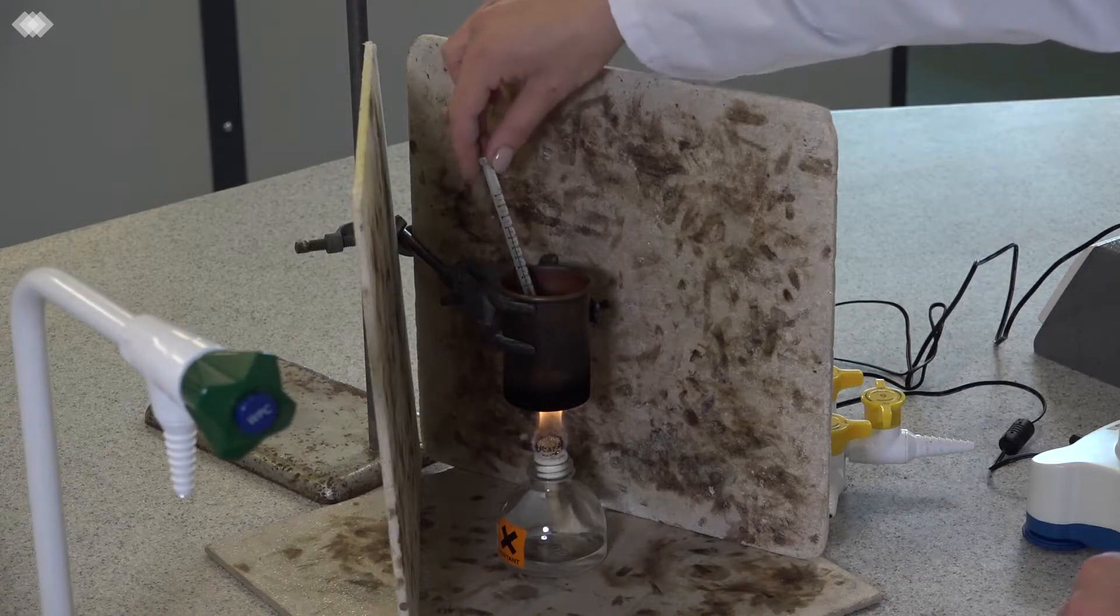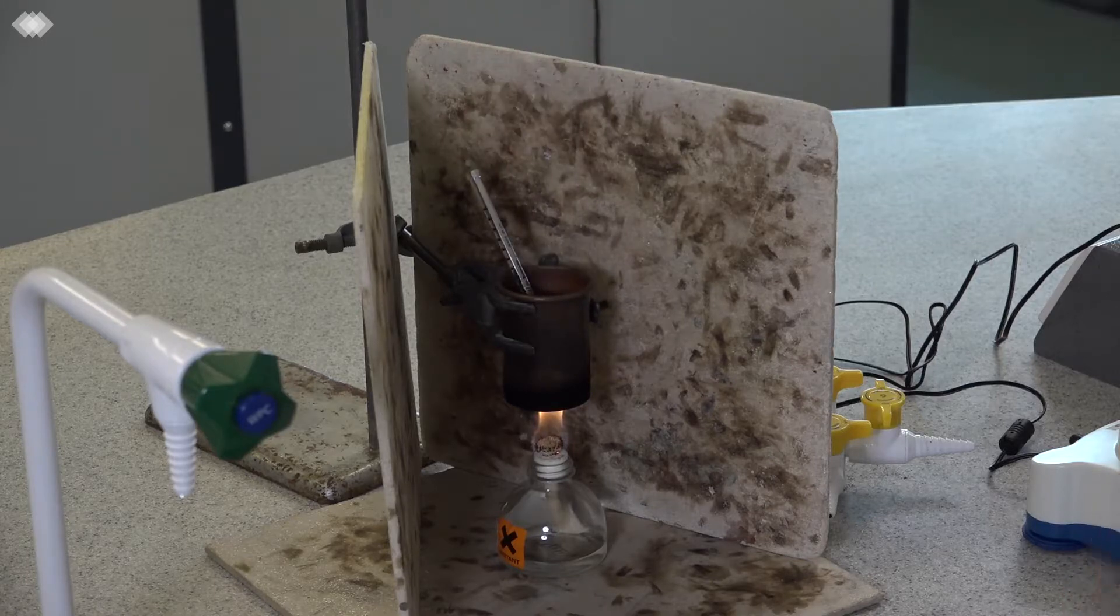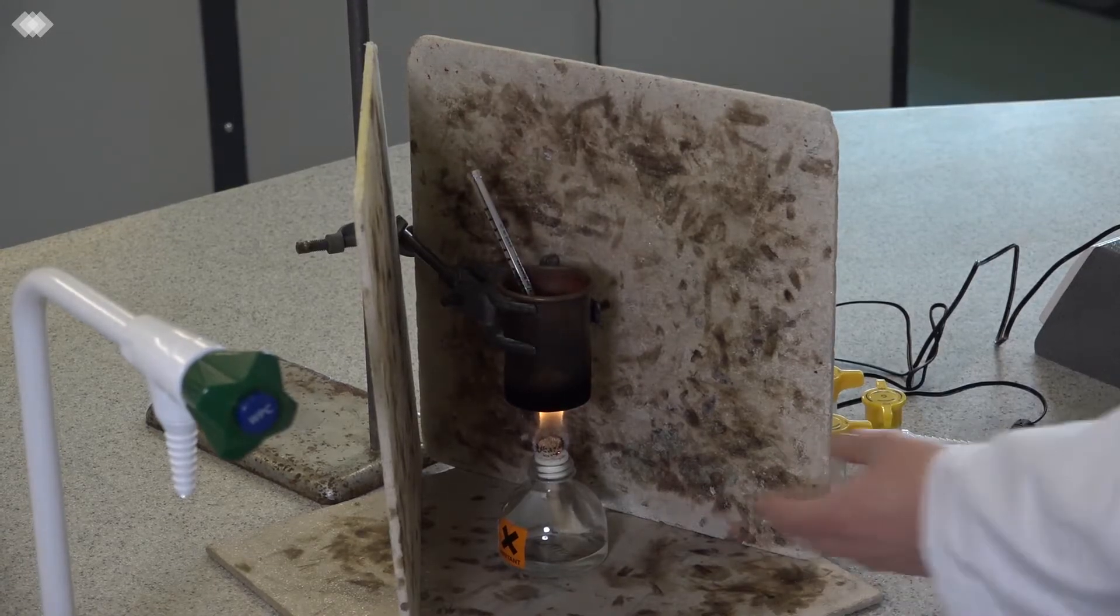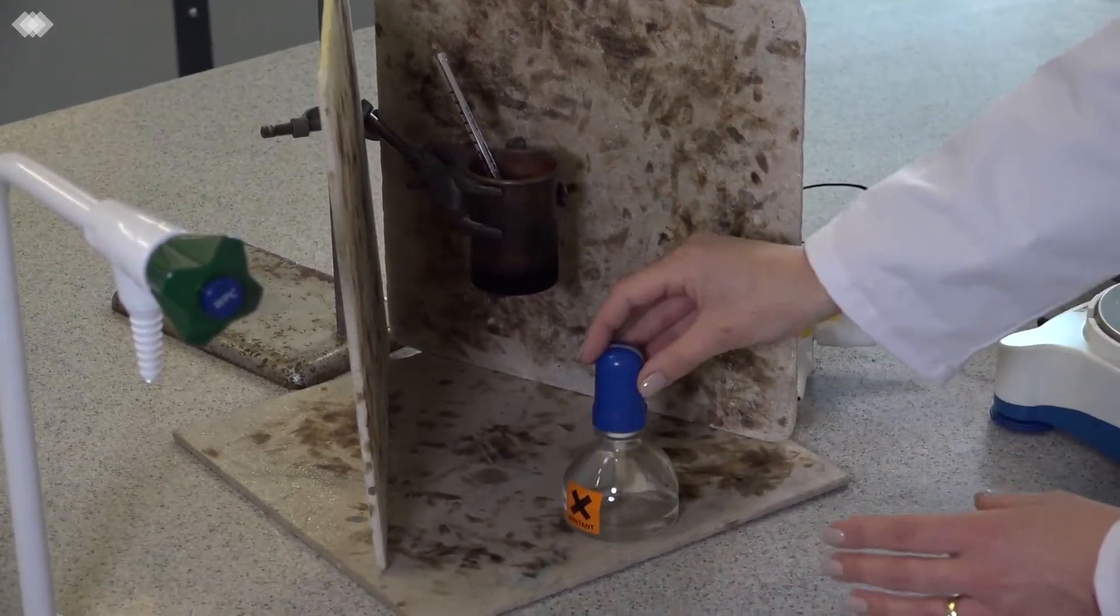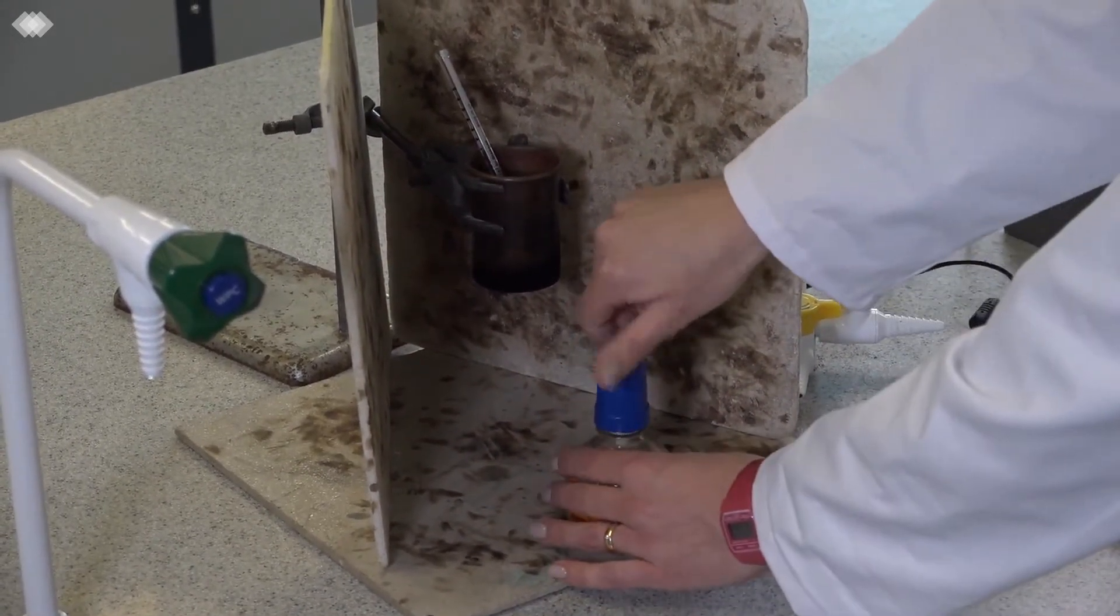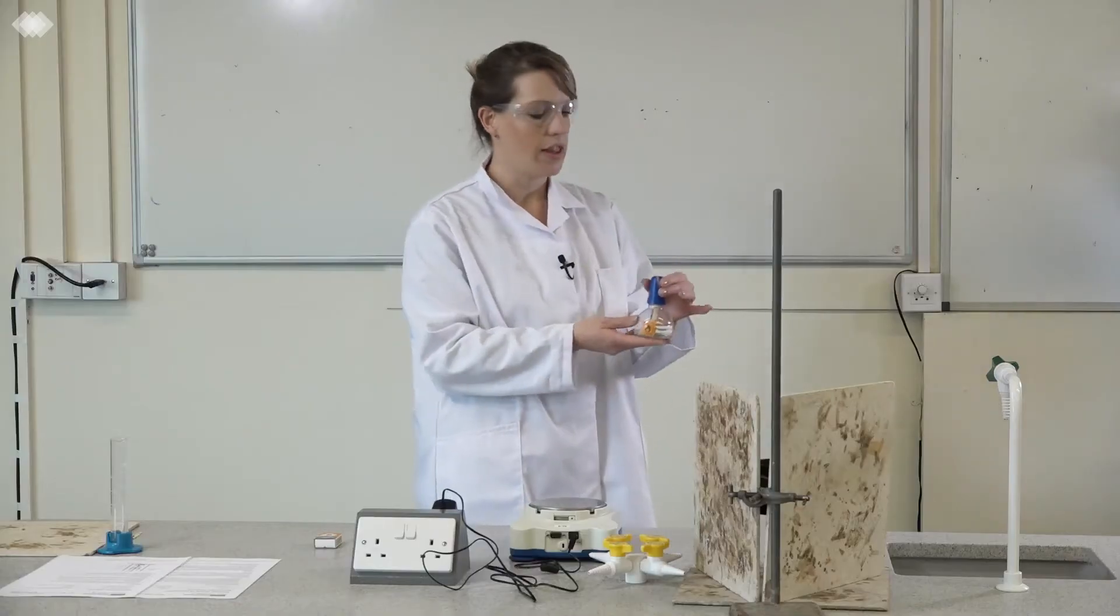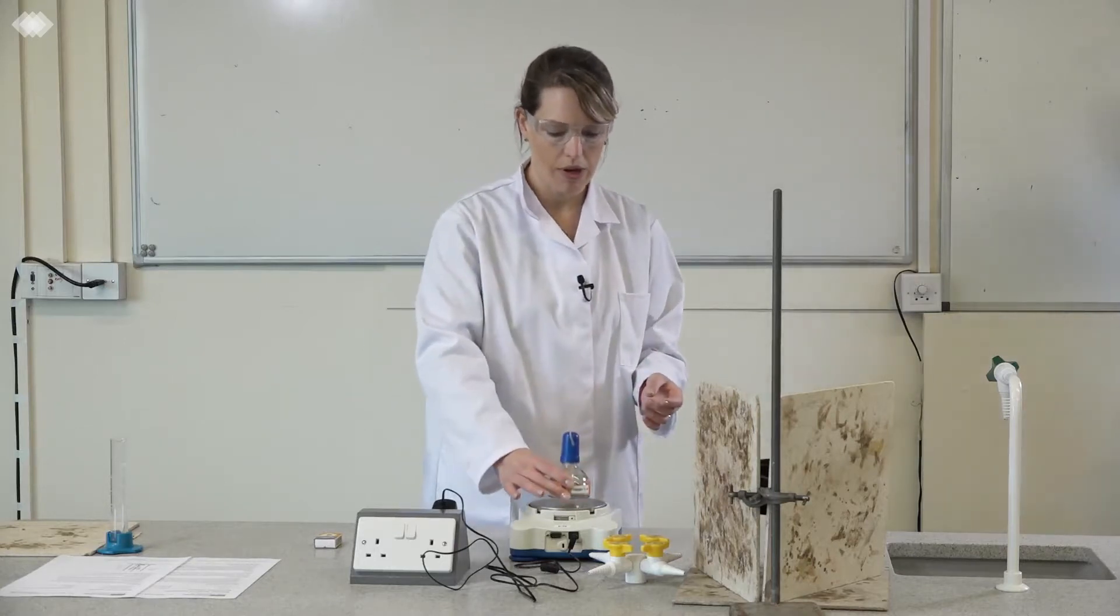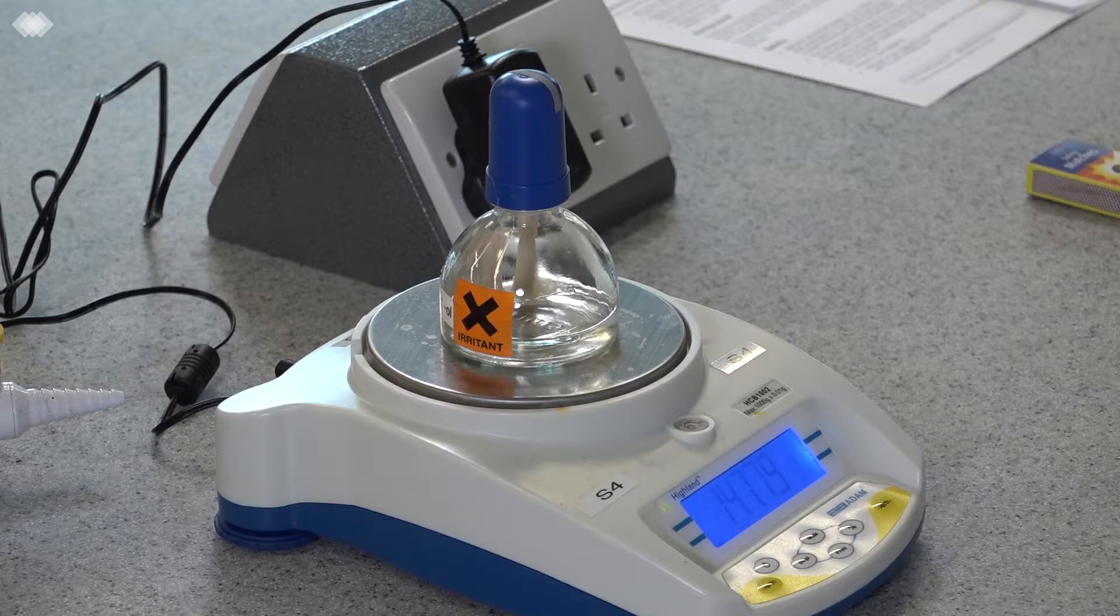Now the temperature has increased by about 50 degrees so I can stop heating. In order to extinguish the spirit burner, take the lid and put it straight over the flame. You have to do it very quickly so it immediately excludes the oxygen and the flame goes out. Then re-weigh the spirit burner with the lid on and record the mass.